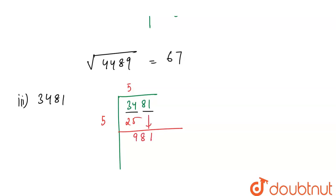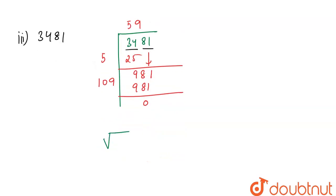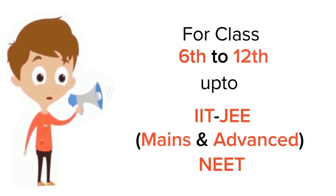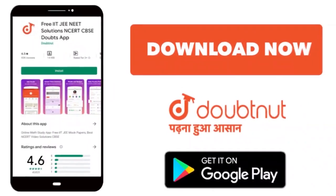5 plus 5 is 10. And if we multiply 109×9, we will get 981, and here we will get 0. So the square root of 3481 is 59. So we get our answers for the 3 questions. Thank you. For class 6 to 12, IIT, and NEET level, trusted by more than 5 crore students, download Doubtnut app today.